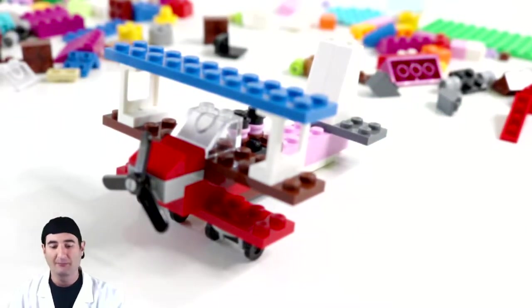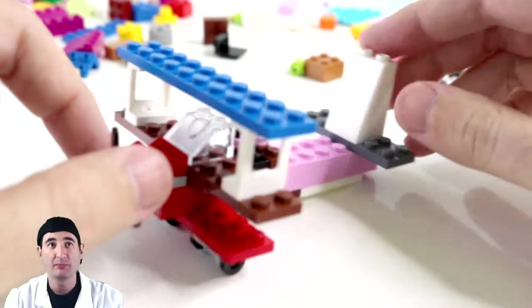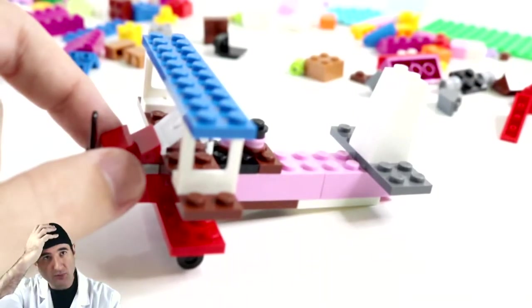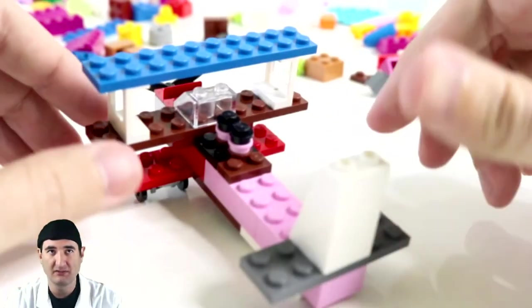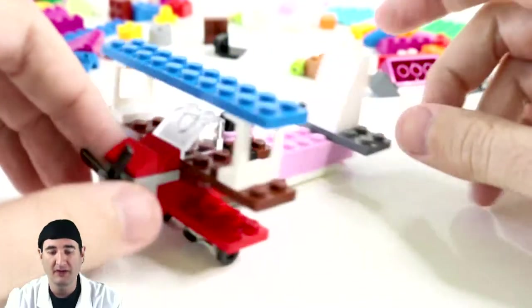So this is a Red Baron triplane, or any other triplane that was back in World War I. So this is a representation of the World War I fighters.